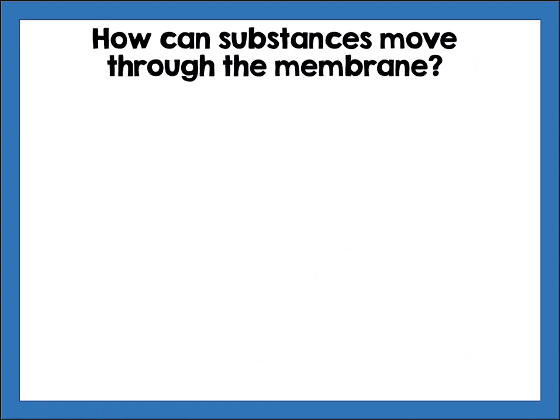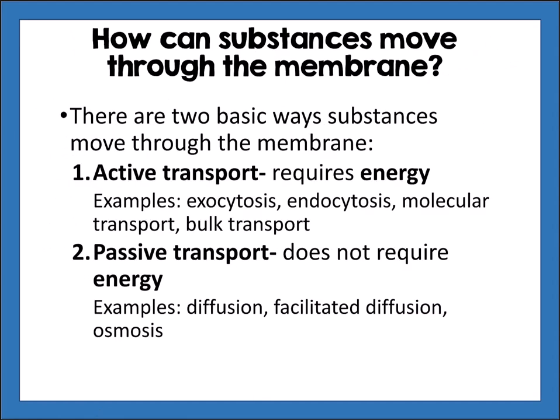There are two basic ways substances move through the membrane. Active transport requires energy — examples include exocytosis, endocytosis, molecular transport, and bulk transport. Passive transport does not require energy — examples include diffusion, facilitated diffusion, and osmosis. We'll talk about each of those in depth.